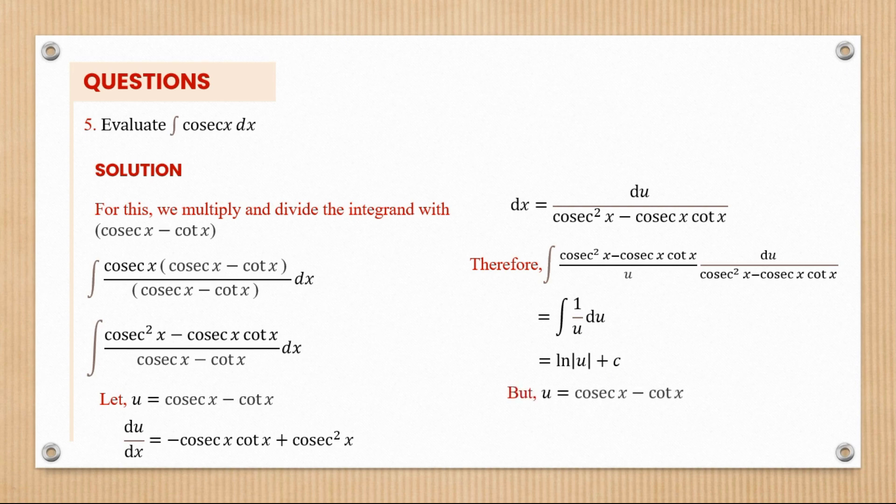We have to remember that u is cosec x minus cot x. So we put that back and our final answer shall be ln of cosec x minus cot x plus c.